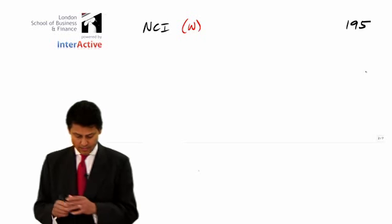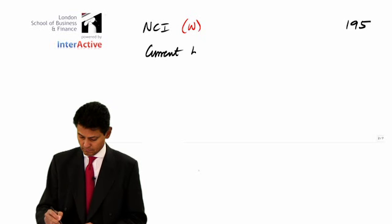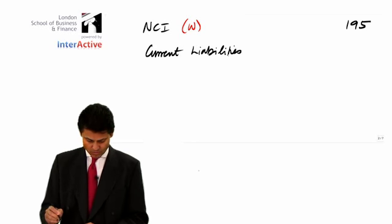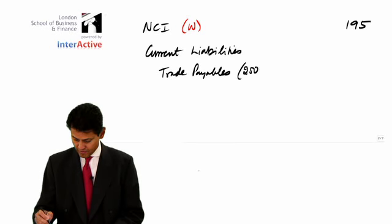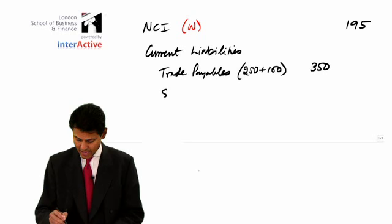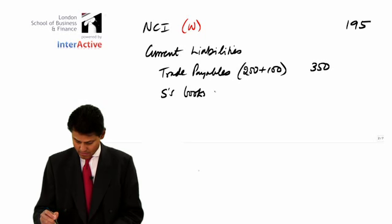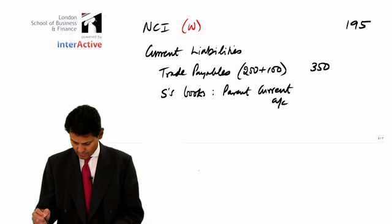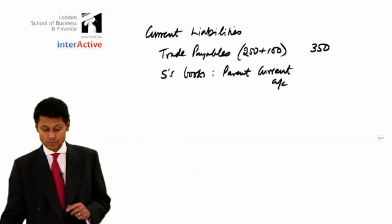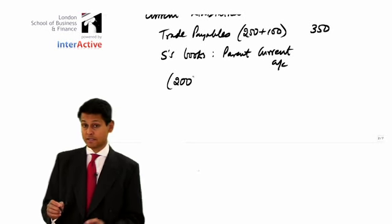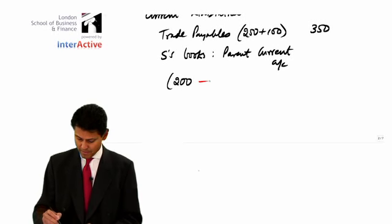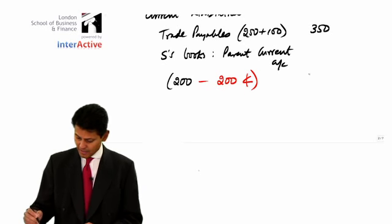And the current liabilities, which is trade payables from the question. Have a look at the question. 250 plus 100, which is obviously 350. Then you have S's books, parent, company, current account. It's whose books that you... It's the person's books that it's in that decides the status. So, it's the current liability. The subsidiary is going to pay 200 to you. You're the parent. I'm the subsidiary member. So, that's 200. Cancel like that. And so, that's going to be nil.